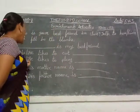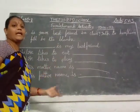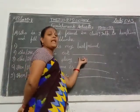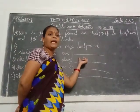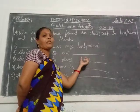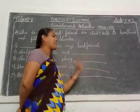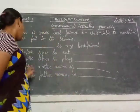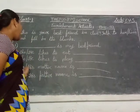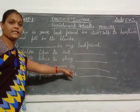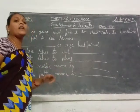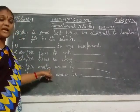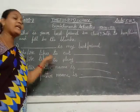And she or he likes to play — game name also. Your best friend likes to play — what is that game? You write that game name here. And here, his or her mother's name — in this blank you write your best friend's mother's name.